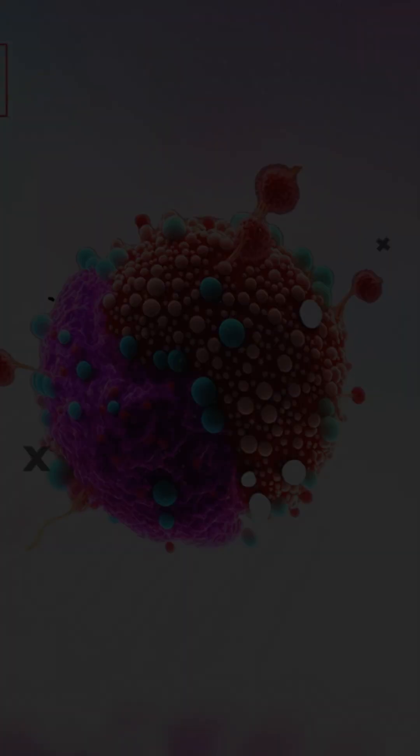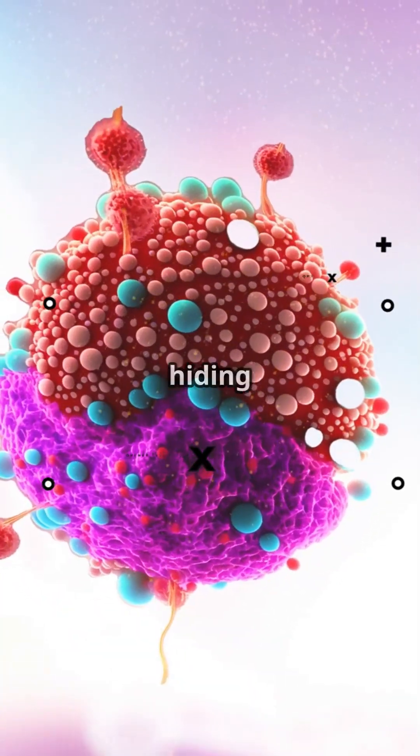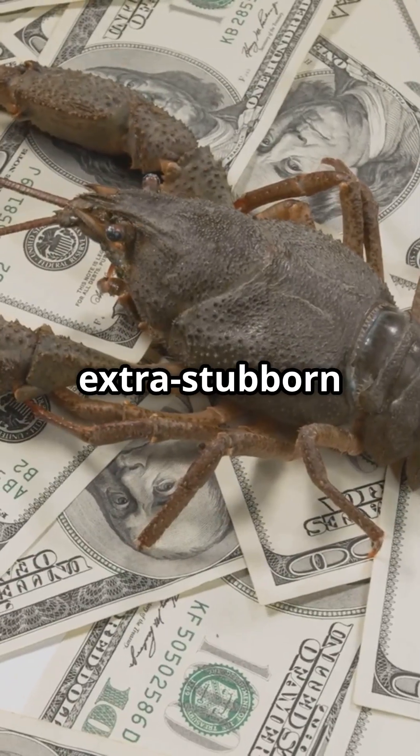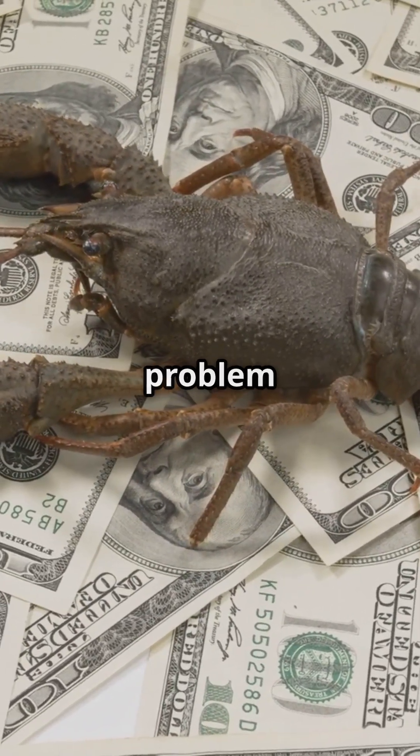Plus, cancer is sneaky. It can talk to healthy cells, tricking them into building blood vessels and even hiding from your immune system. Some extra stubborn cells called cancer stem cells can survive treatment and start the whole problem over again.